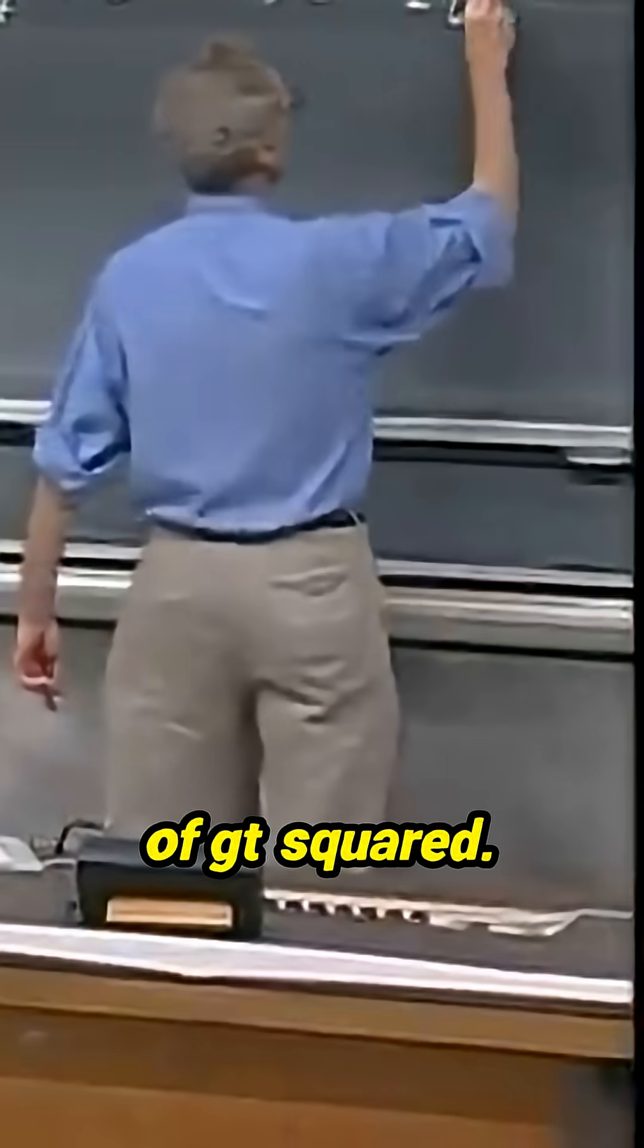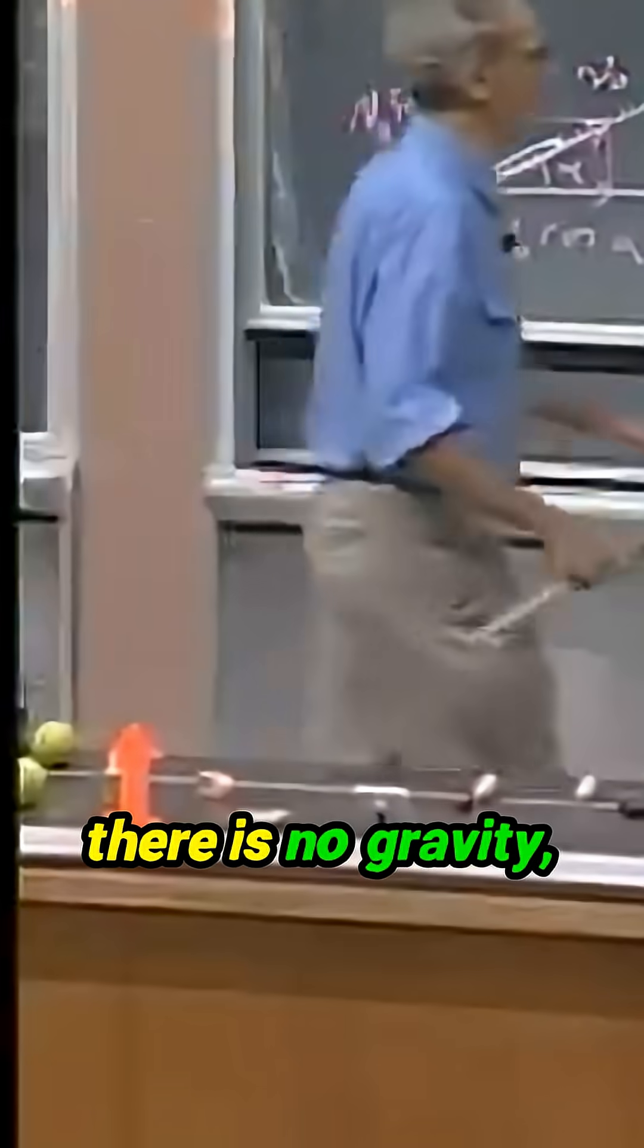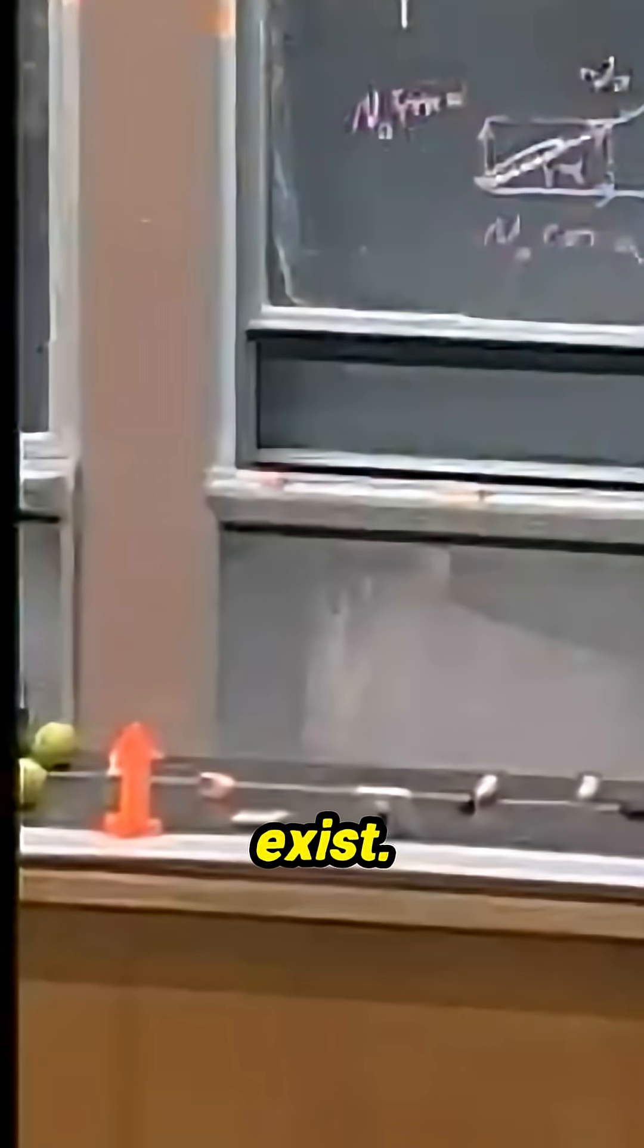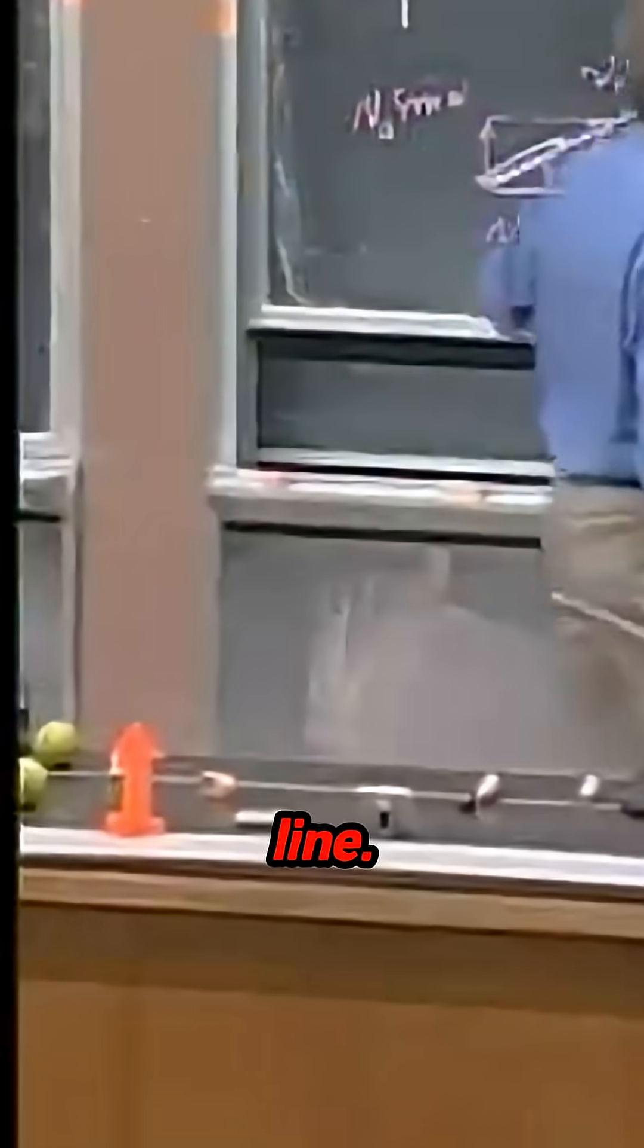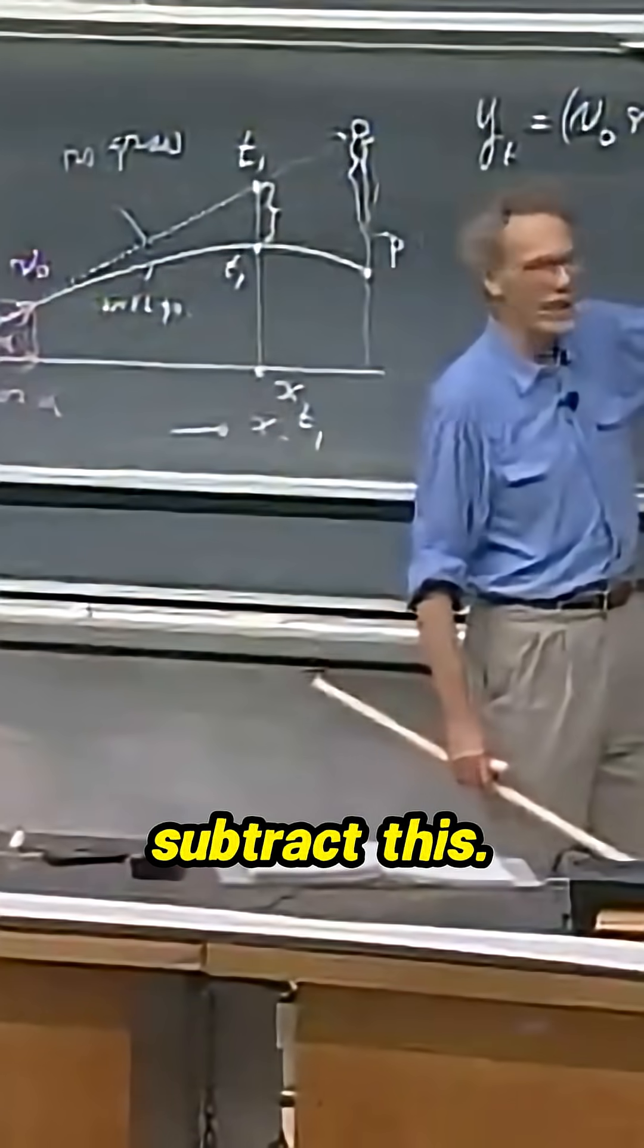minus one-half gt squared. Well, if there is no gravity, this term doesn't exist. So that's this straight line. With gravity, it's the same thing, but you have to subtract this.